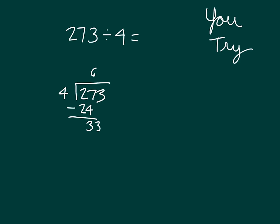What are we dividing by again? 4. 33 divided by 4 is 8, because 8 times 4 is 32, and 33 minus 32 is 1. Did you remember to write remainder as part of your solution and answer?